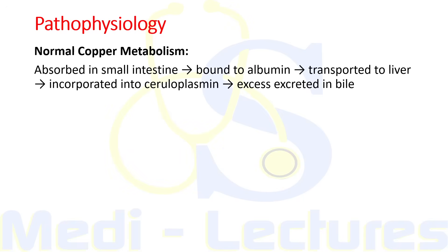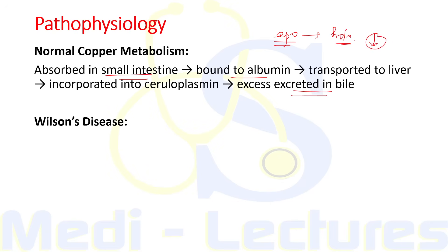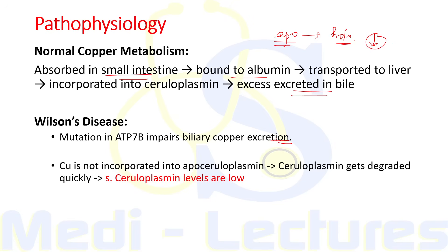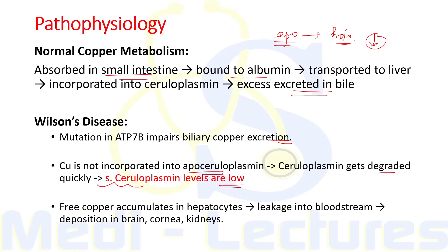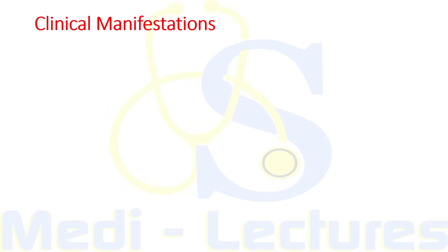In normal copper metabolism, copper is absorbed in the proximal small intestine, bound to albumin, transported to the liver, and incorporated into apoceruloplasmin forming holoceruloplasmin, which is then excreted into bile. In Wilson's disease, mutation in ATP7B impairs biliary copper excretion. Copper cannot incorporate into apoceruloplasmin, ceruloplasmin gets degraded quickly, so Wilson's disease is characterized by low serum ceruloplasmin. Free copper accumulates in hepatocytes, leaks into the bloodstream, and deposits in the brain, cornea, and kidneys.